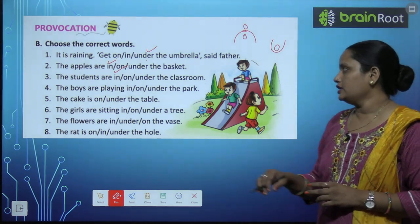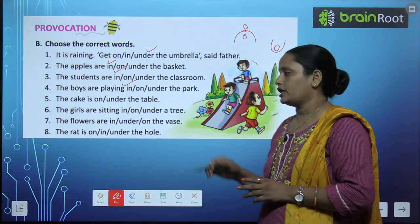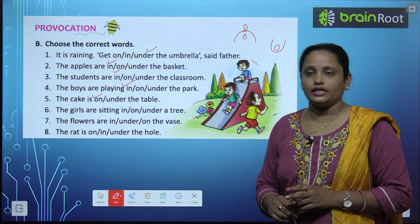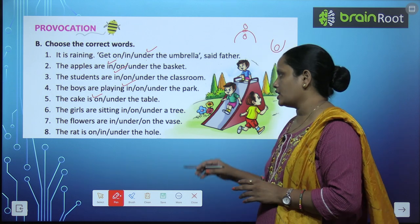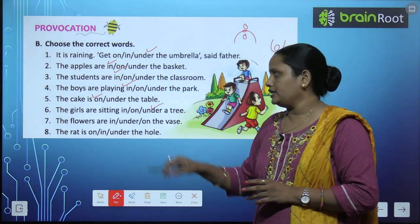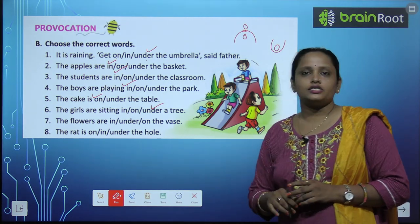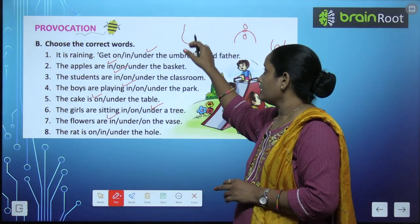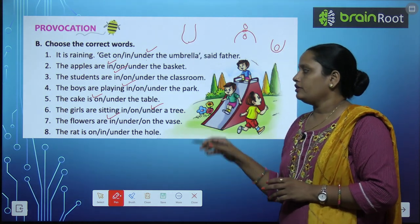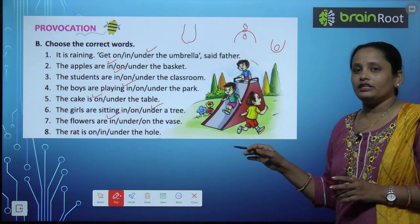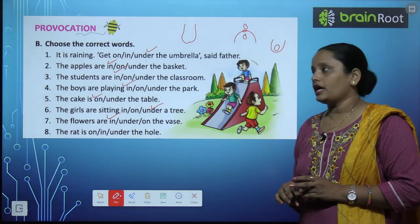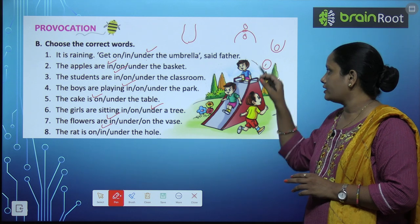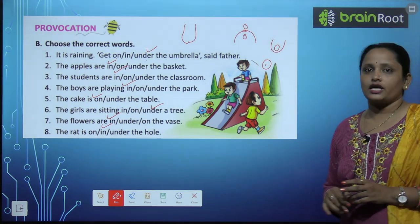The boys are playing in the park. The cake is on the table — table pe hi rakte hain, under thoda na rakte neeche. The girls are sitting under a tree — tree ke neeche baithi hain. The flowers are in the vase — flowers woh vase ke andar hain. The rat is in the hole, on the hole, or under the hole? So yes, the rat is in the hole. Hole ke andar rat chup gaya hai jaake.